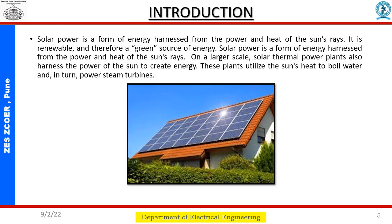In this slide we have an introduction to the topic. Solar power is a form of energy harnessed from the power and heat of the sun's rays. It is renewable and therefore a green source of energy. On a larger scale, solar thermopower plants also harness the power of the sun — utilizing the sun's heat to boil water and in turn power steam turbines.